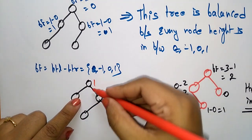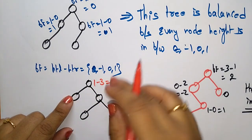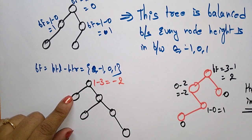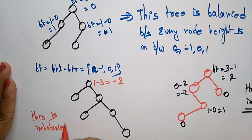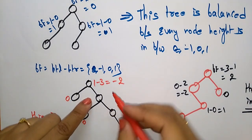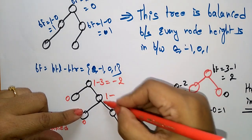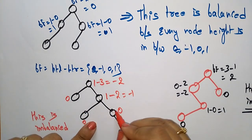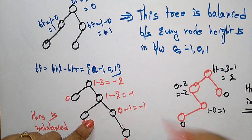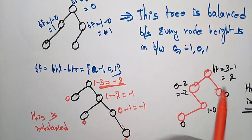Checking the other nodes: height of left subtree is 1 and right subtree is 2 levels, so 1 − 2 = −1, which is satisfied. Left is 0 and right gives −1, so that node is also in range. But since the root node's balance factor of −2 is not in range, the entire tree is imbalanced — if any one node is not satisfied, the tree is imbalanced.